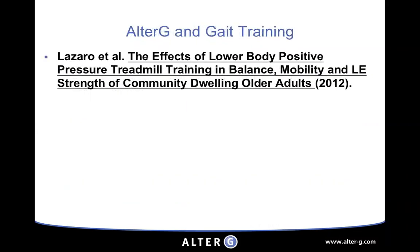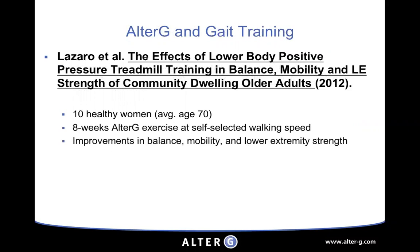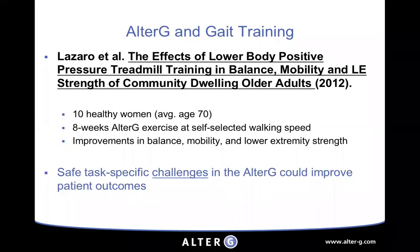In a study out of Samuel Merritt University, Professor Rolando Lazaro worked with 10 healthy older adults in the anti-gravity treadmill for eight weeks of exercise at a self-selected walking speed. He saw improvements in balance, mobility, and lower extremity strength — highlighting that safe task-specific challenges in the Alter-G can improve patient outcomes. Better balance, mobility, and strength translate to less fall risk. Patients may also be more willing to do closed kinetic chain activity, including elderly patients with osteoporosis or deconditioning.